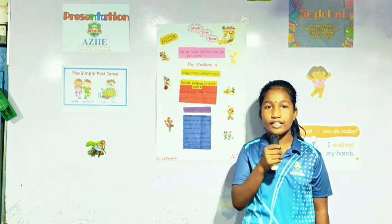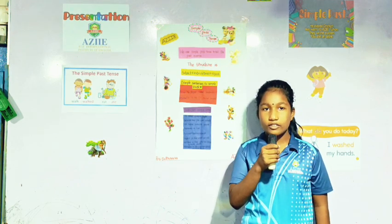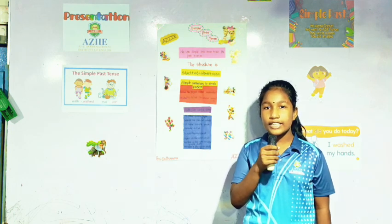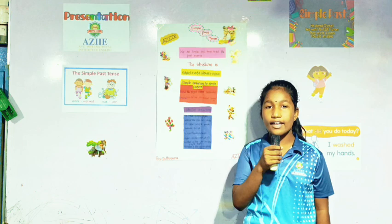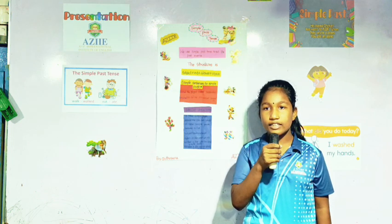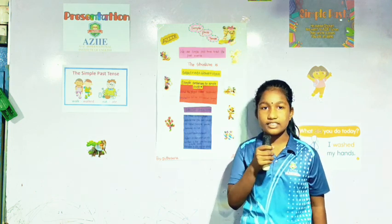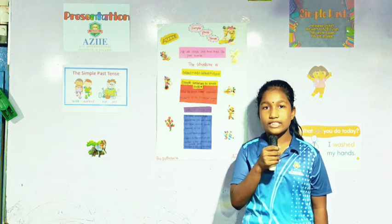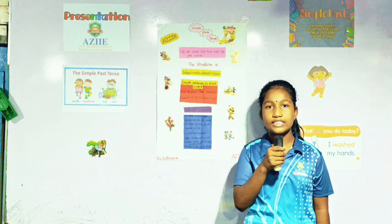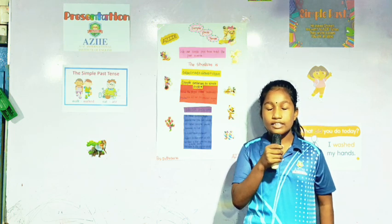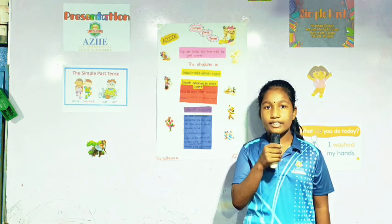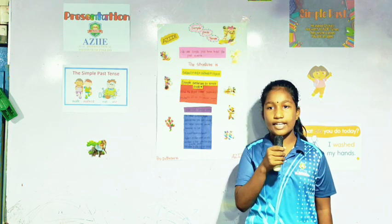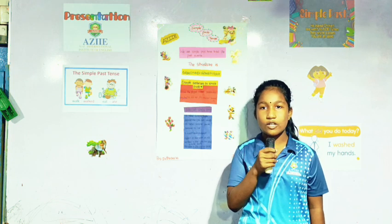Good evening, everybody. I am Jansana. I am going to tell about simple past tense. We use simple past tense to tell the past events. The structure is subject plus verb plus deep past plus object. Example: He played cricket yesterday. He did not play cricket yesterday.